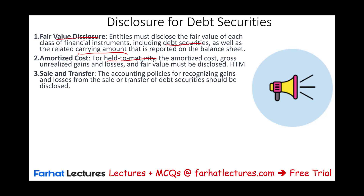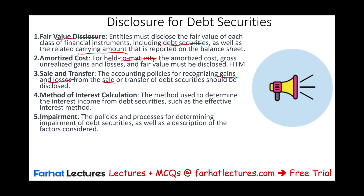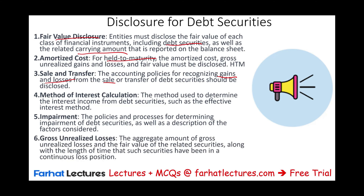For sale and transfer, we disclose the accounting policies for recognizing gains and losses, including the policy for the sale or transfer of debt securities. We also disclose the method of interest computation — how we computed the accrued interest on these bonds. Regarding impairment: sometimes an investment permanently loses value. We disclose how we determine whether an investment lost value and how we arrived at that decision. We also disclose gross unrealized losses — usually losses are more important, being conservative — including the aggregate amount of gross unrealized loss, the fair value of related securities, and the length of time we have held those securities in a continuous loss position.